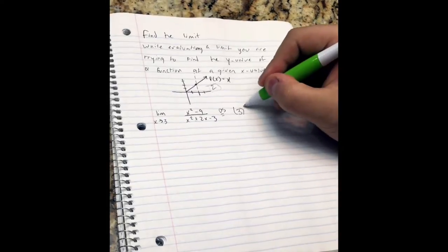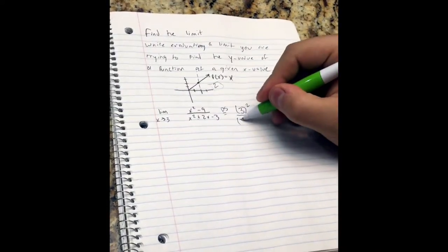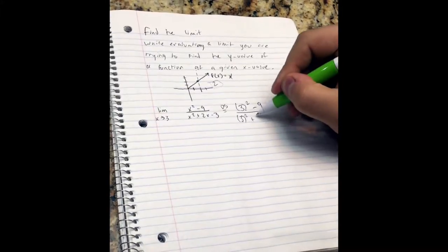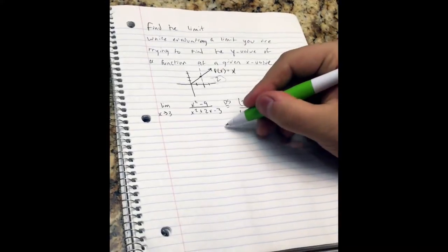So you would do 3 squared minus 9 over 3 squared plus 2 times 3 minus 3. This would equal the limit as x approaches 3 of 9 minus 9 over 9 plus 6 minus 3.